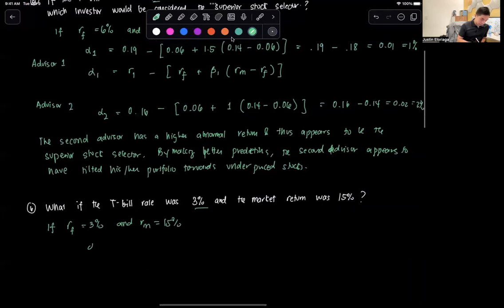Alpha 1 is 0.19 minus the risk-free rate, which is 0.03, plus the beta 1.5, times 0.15 minus 0.03.